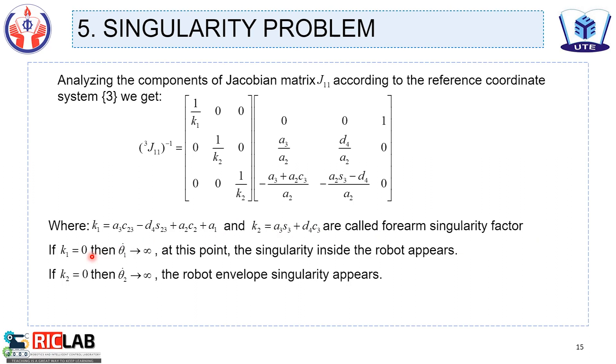where the first case and the second case are called arm singularity factors. If the first case equals 0, then theta 1 dot goes to infinity. At this point, the singularity inside the robot appears. If the second case equals 0, then theta 2 goes to infinity. The robot envelope singularity appears.